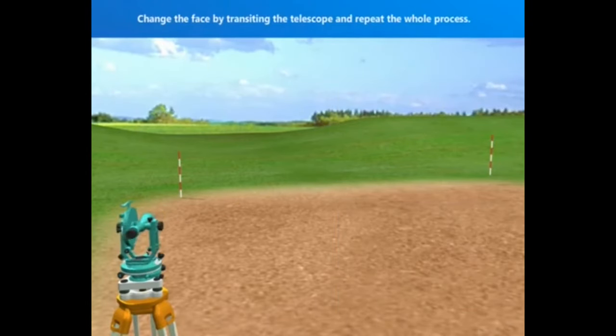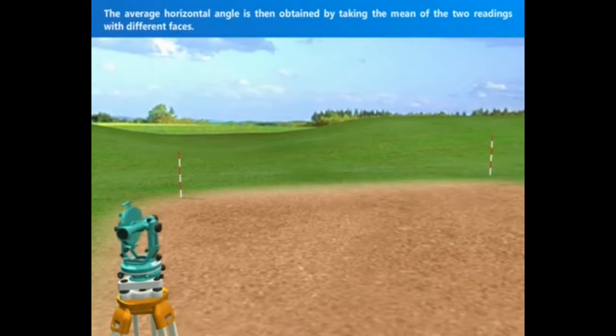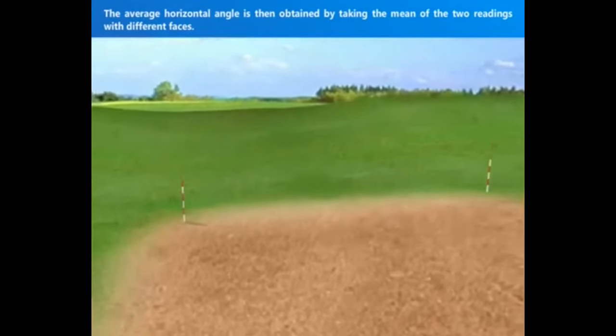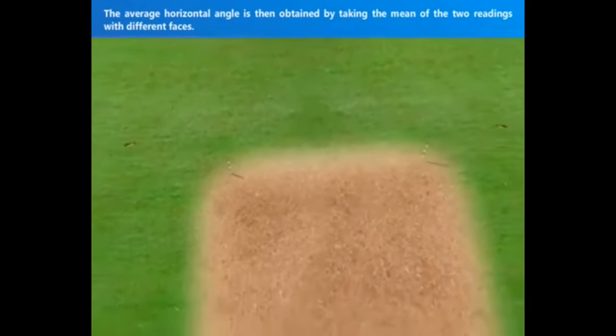Change the face by transiting the telescope and repeat the whole process. The average horizontal angle is then obtained by taking the mean of the two readings with different faces.